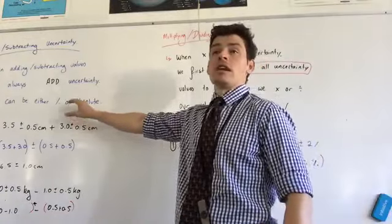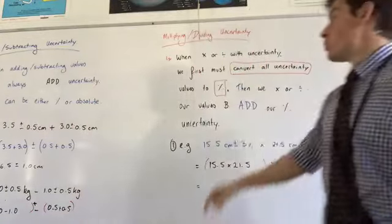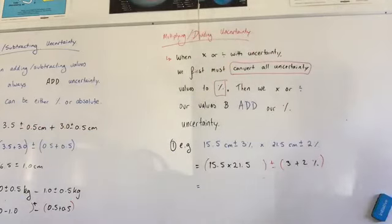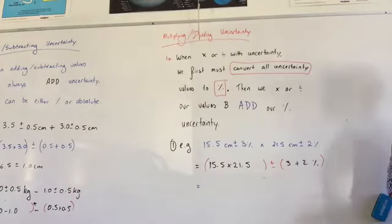Happy with that? Adding and subtracting, I can deal with either absolute or percentage. With multiplication and division, if they give me an absolute uncertainty, I must convert it to a percentage and then add them together. The crows love it. Hopefully you do too. You're going to complete these examples and then you're going to move on to the sheet.